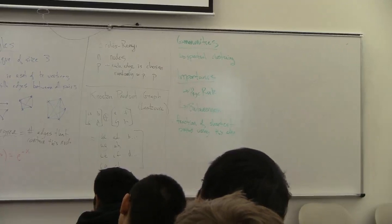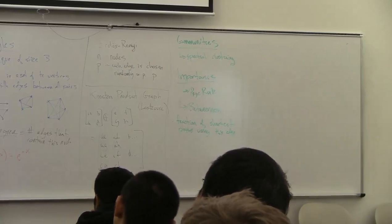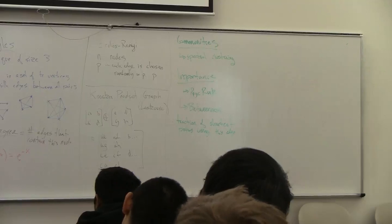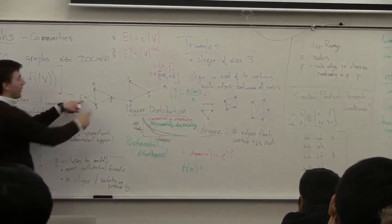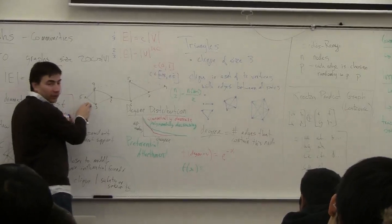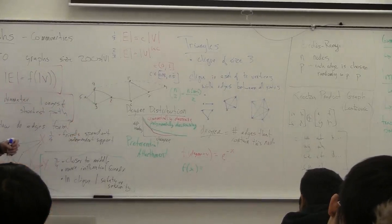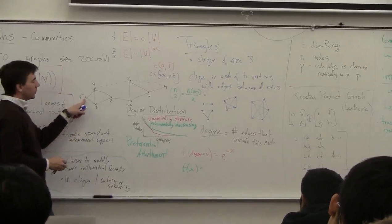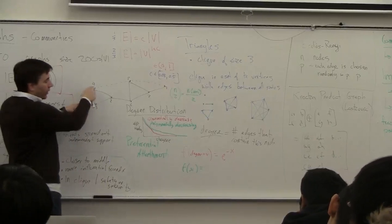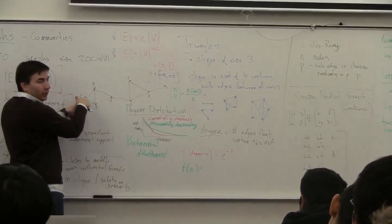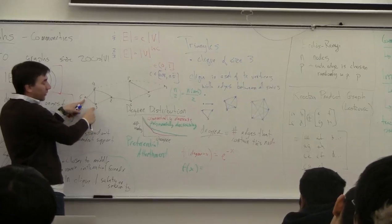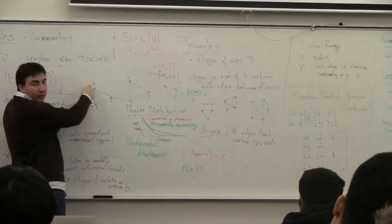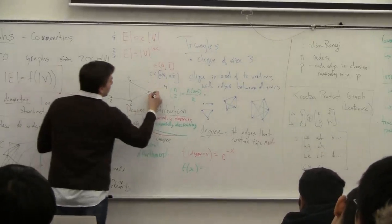For a more complex case — say from node 5 to node 2 there are two shortest paths, either going down through 3 or up through 4 — in that case the edge gets half credit: one-half of a shortest path goes through it. Every shortest path through 5 puts half its weight on this edge, and if it goes to 3 it gets full weight.